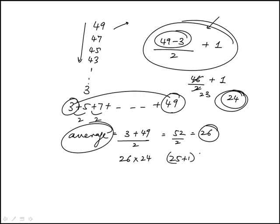And just to be a little bit fancy here, I notice that this is the same as 25 plus 1 times 25 minus 1, which is, using difference of squares, 625 minus 1. So the answer is 624.